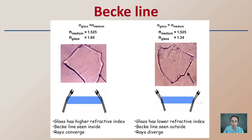Here are additional pictures showing the refractive index of the medium versus the glass — the liquid versus the glass — and the bending that's occurring. The rays are converging here because the glass has a higher refractive index, and the Beck line is seen on the inside of that fragmented glass.